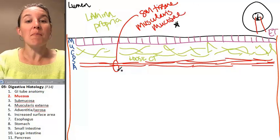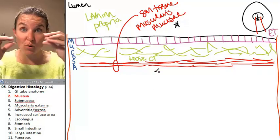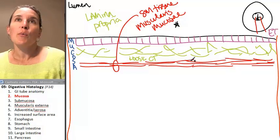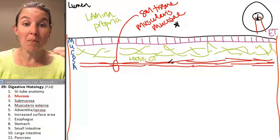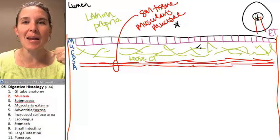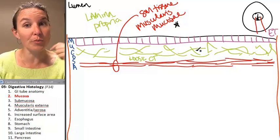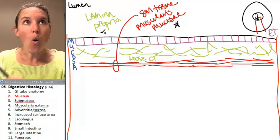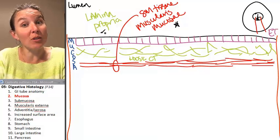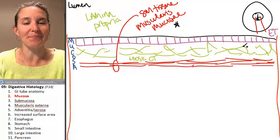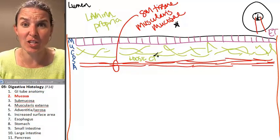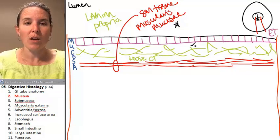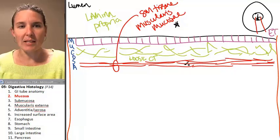The muscularis mucosi is the smooth muscle layer. Now, luminal to muscularis mucosi, what's the name of the layer that's luminal to muscularis mucosi? That's the lamina propria. What kind of tissue is luminal to muscularis mucosi? Loose connective tissue. Do you see the difference there? Of course you do.